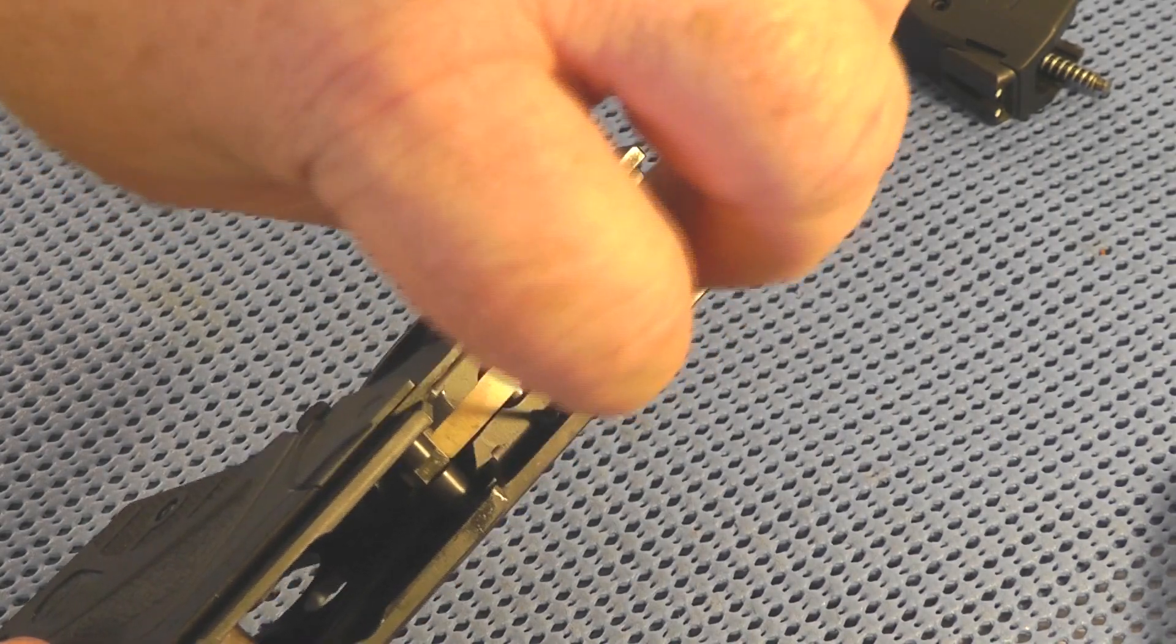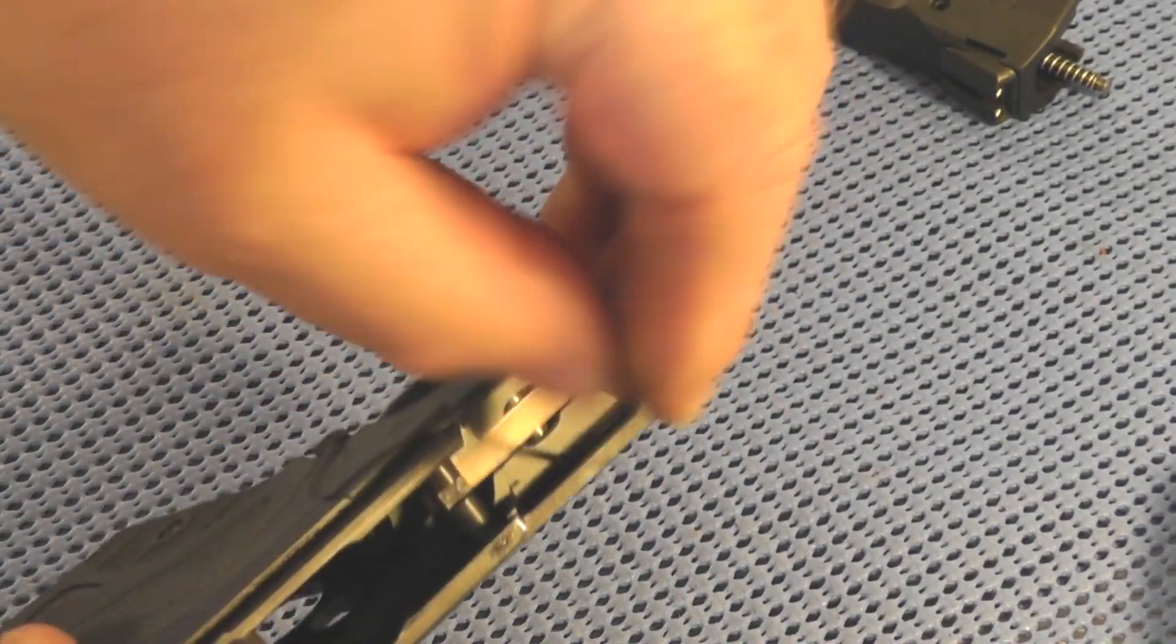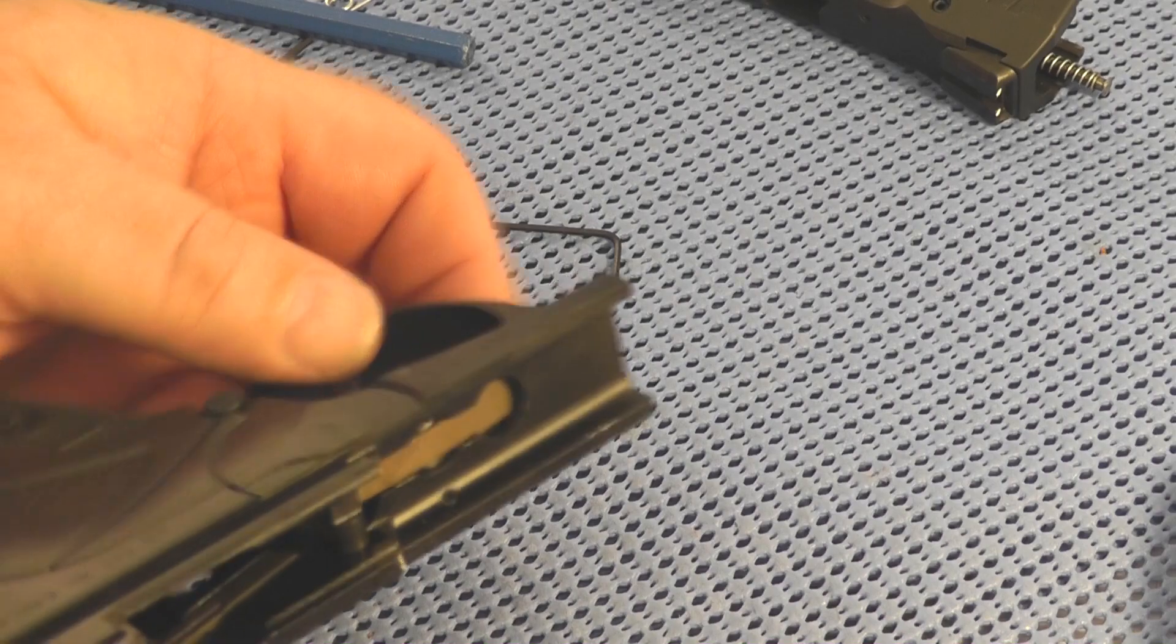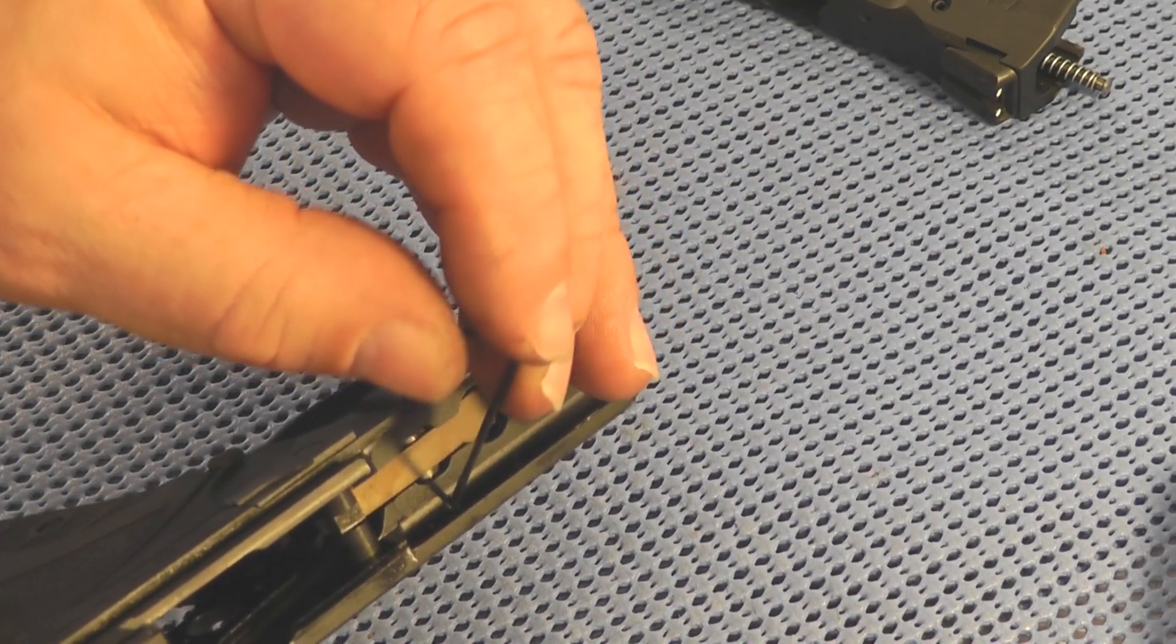You just want to make sure you get that set screw down flush, good and snug and below the frame, because that's where your recoil spring sets in that little track there.